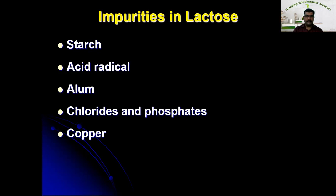The next important impurity in lactose is copper. Copper comes as an impurity because the preparation may be done in copper vessels. To identify it, we add potassium ferrocyanide to the lactose. If a reddish color is obtained, that indicates the presence of copper in the lactose. Thus we can identify the chemical impurities in lactose.